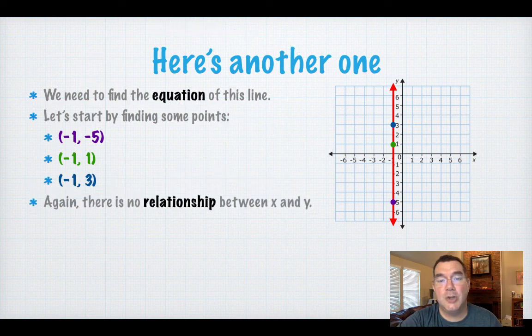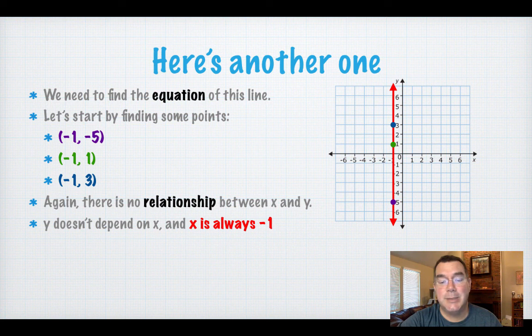And as you can see again, there's no relationship between x and y. Y can be whatever it wants, but x has to be -1. So my equation is x equals -1.